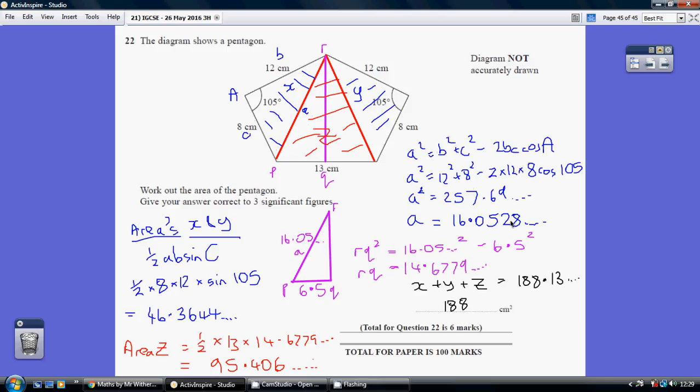So back to triangle RPQ, which I'll pop down here in purple, just worked out RP to be 16.05. PQ is obviously half of 13, which is 6.5, allowing me to work out RQ by Pythagoras and working out the shortest side to be 14.677. So I've eventually been able to work out the length RQ.